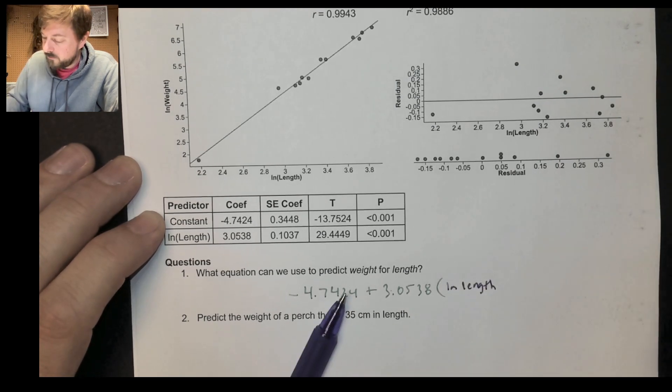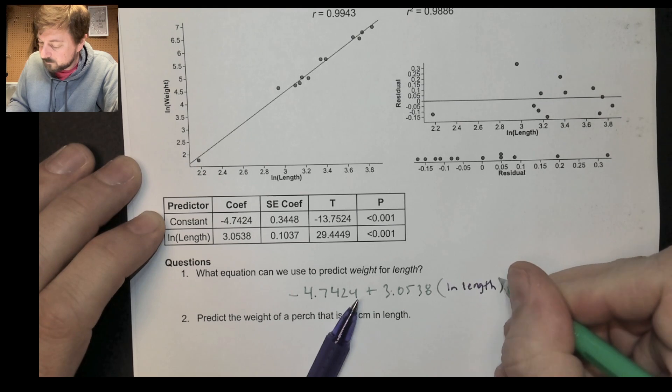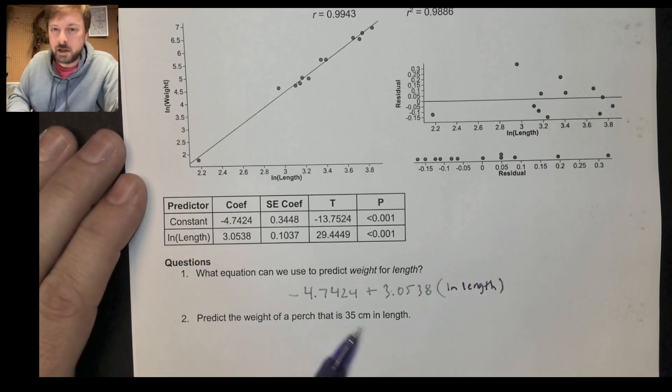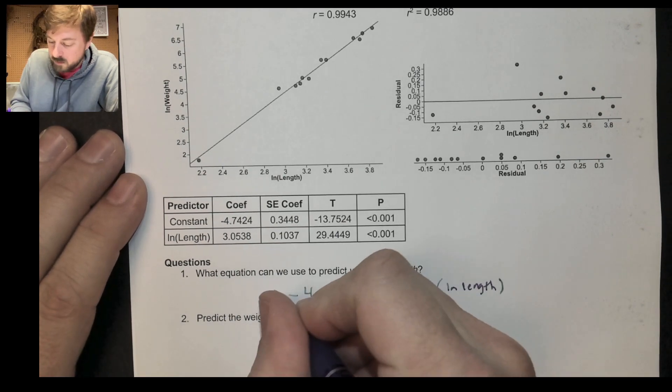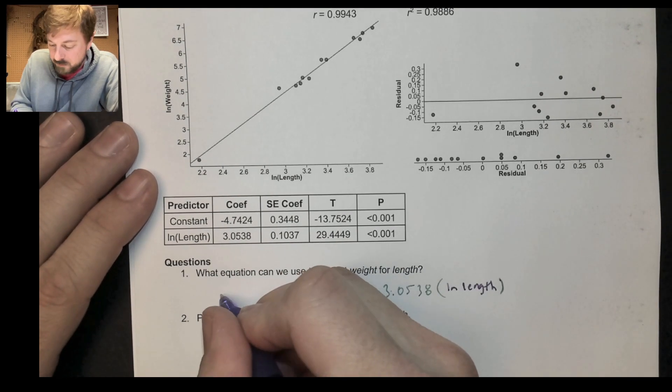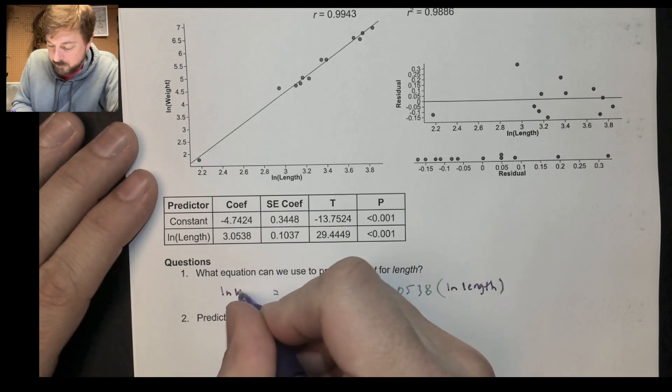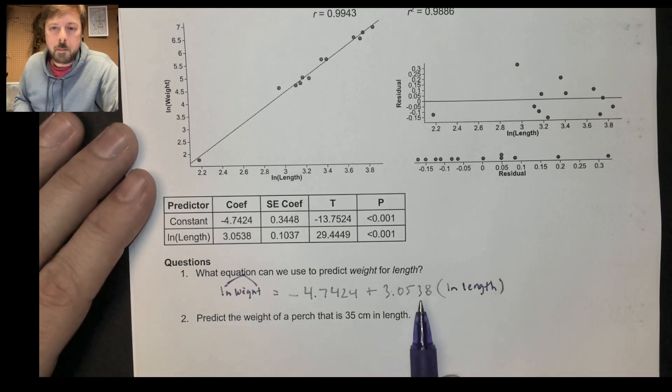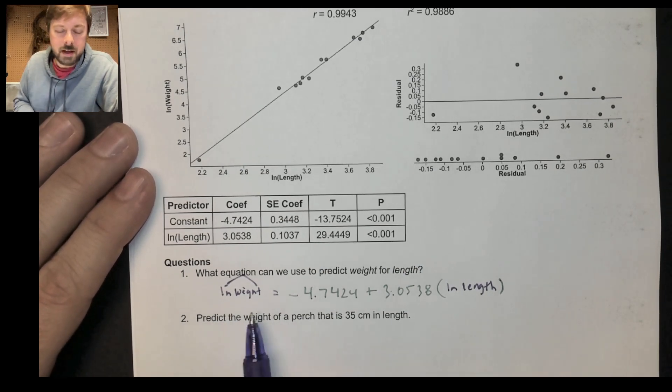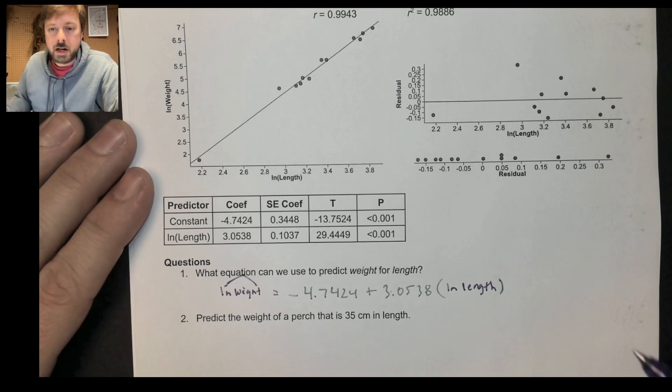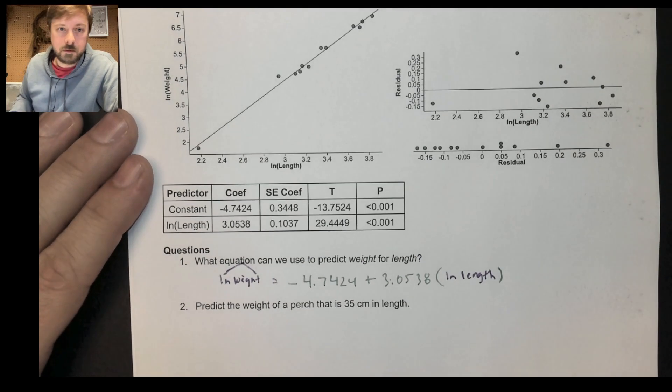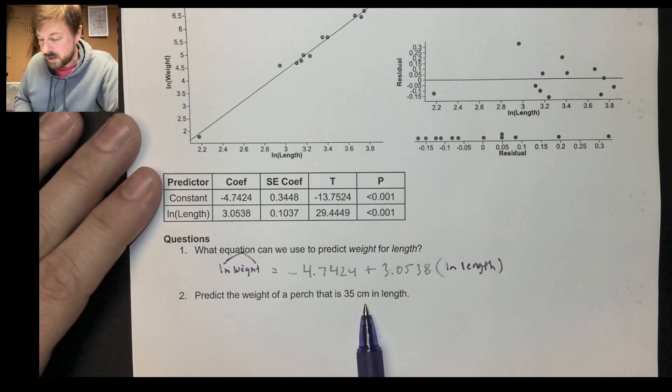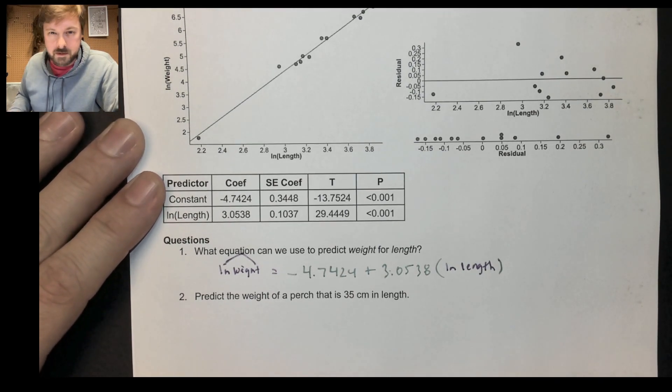So the input here, the input that I would put in, isn't the length itself. I'm going to plug in the natural log of length. Now when I plug in the natural log of length, what's going to be output is a prediction for the natural log of the weight of this perch, right? So I'm plugging in the natural log of a length and I'm going to get shot out the natural log of the weight, which I could just use algebra to turn into a more natural kind of number.